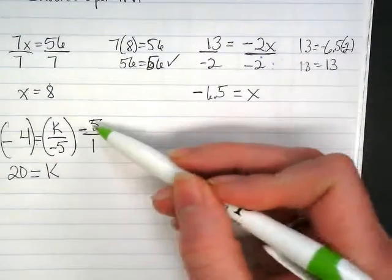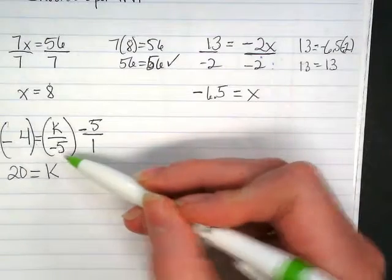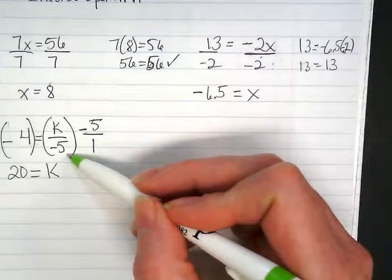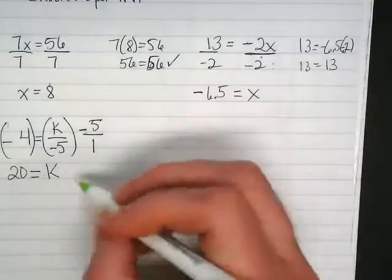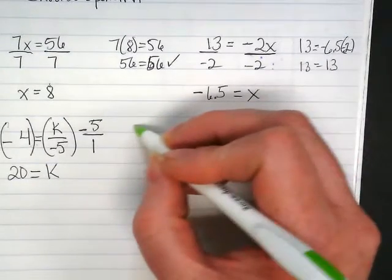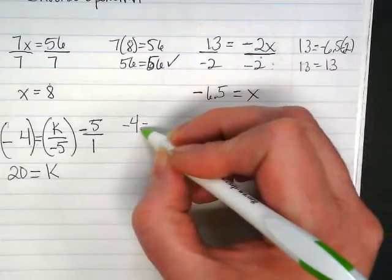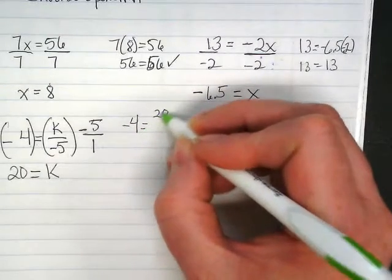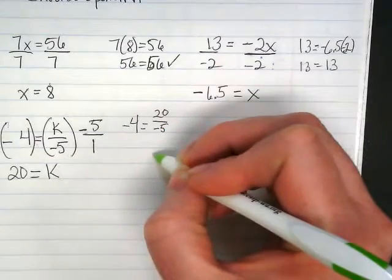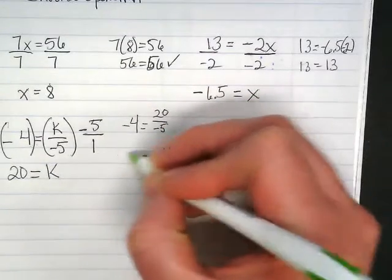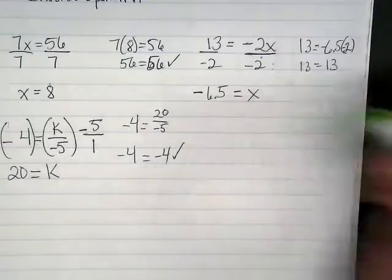Negative 5 times negative 4 would be 20 divided by 1, so I get 20 equals k. What happened over here? Negative 5 over negative 5 would be a positive 1, and then we're just left with that 1 over 1. So we can test it by checking, negative 4 does it equal 20 divided by negative 5? 20 divided by negative 5 would be negative 4, so it checks.